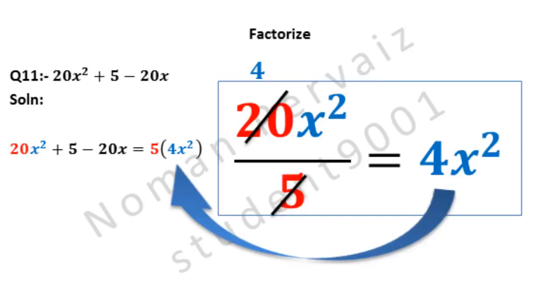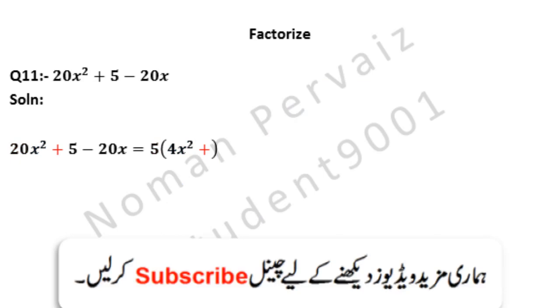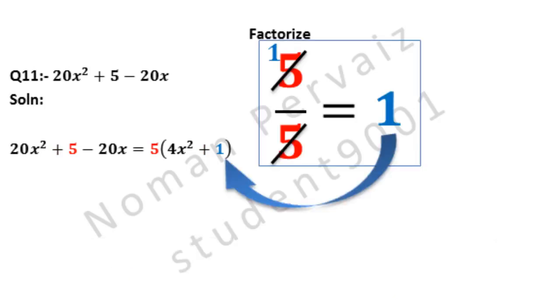Since 5 is common, we divide 20x² by 5. 5 fours are 20, hence 4x² is left. Plus is written as it is. 5 divides 5 one times, so 1 is written. Since 5 is common, we divide 5 by 5, so only 1 will be left.